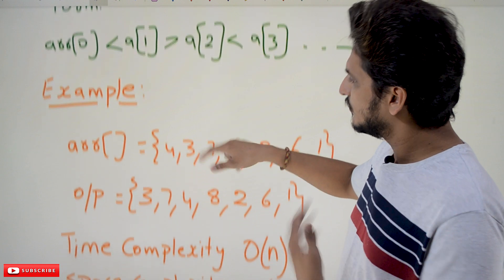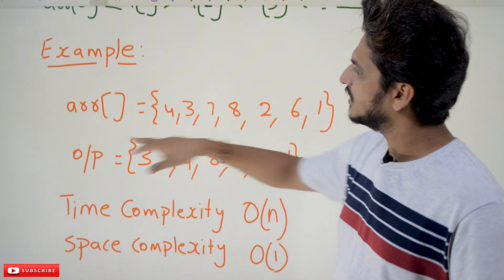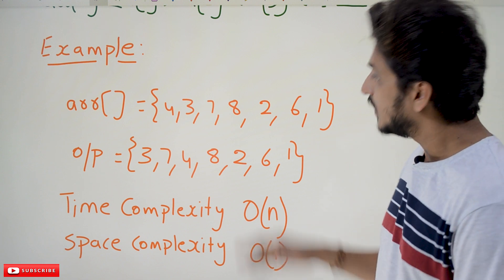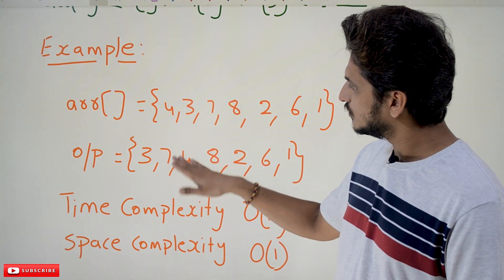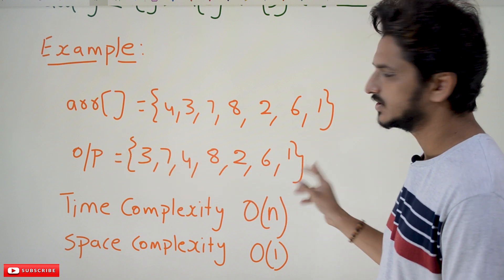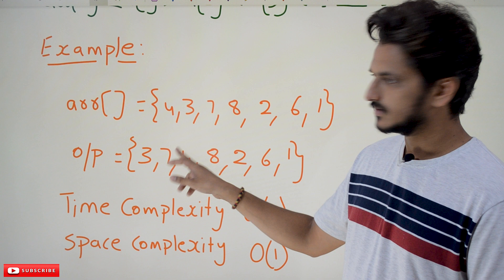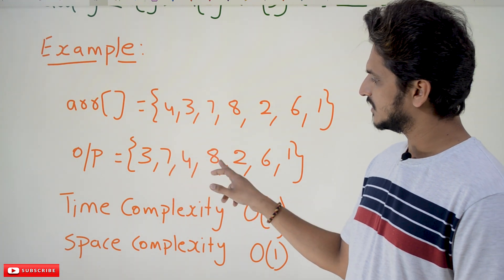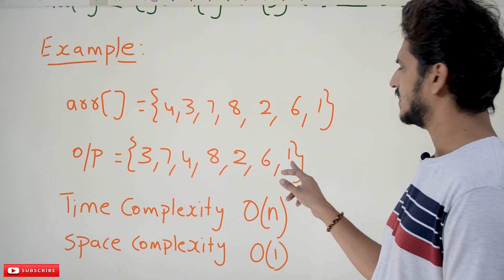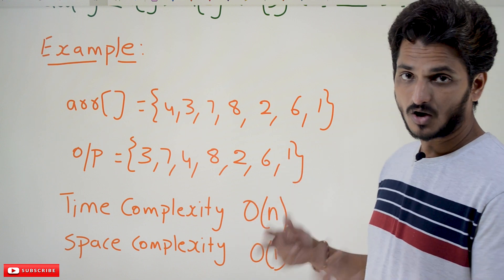Now coming to example for better understanding, take an example array of 4, 3, 7, 8, 2, 6, 1. This is the array we have to convert. After conversion the output should be like this: 3, 7, 4, 8, 2, 6, 1. So 3 is less than 7, 7 is greater than 4, 4 is less than 8, 8 is greater than 2, 2 is less than 6, 6 is greater than 1. This is how you have to convert that.